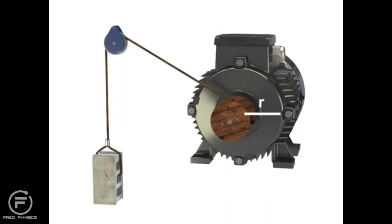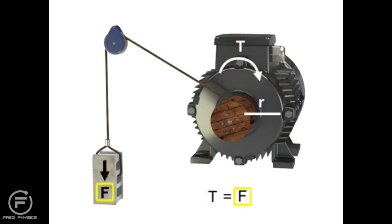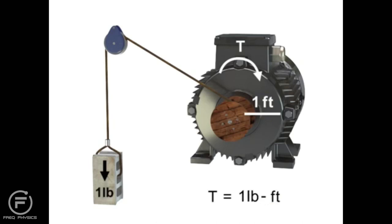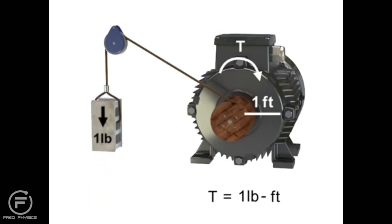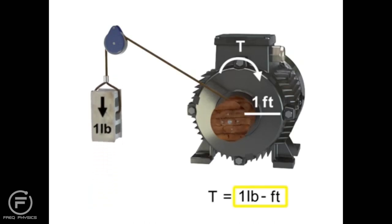Work is defined as a force applied over a distance. In the case of flywheels, winches, and motors, the work is called torque. Torque is a special type of work that produces rotation. Torque occurs when a force acts on a radius. Typical units of measurement for torque are pound-foot. The torque illustrated here is equal to one pound-foot.